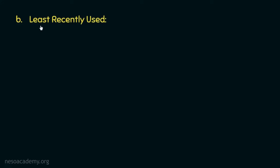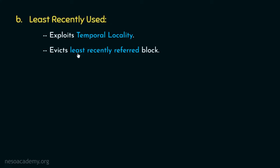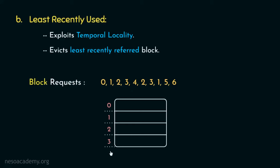Next up is LRU or least recently used. This cache replacement policy exploits the temporal locality principle — meaning the block which got accessed lately is likely to be accessed in the near future. That's why this policy evicts the least recently referred block. Let's understand this with the following block requests and a fully set associative cache with 4 lines. We are going to maintain a list that will dictate the most and least recently used blocks in order.